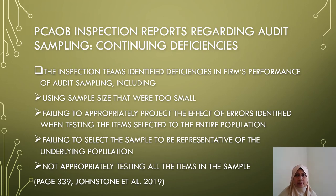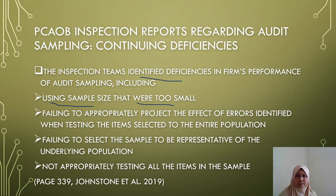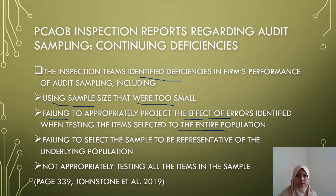PCAOB inspection reports regarding audit sampling identified continuing deficiencies. The inspection teams identified deficiencies in firms' performance of audit sampling, which include: using sample sizes that were too small; failing to appropriately project the effect of errors identified when testing items selected to the entire population; failing to select a sample representative of the underlying population; and not appropriately testing all the items in the sample.